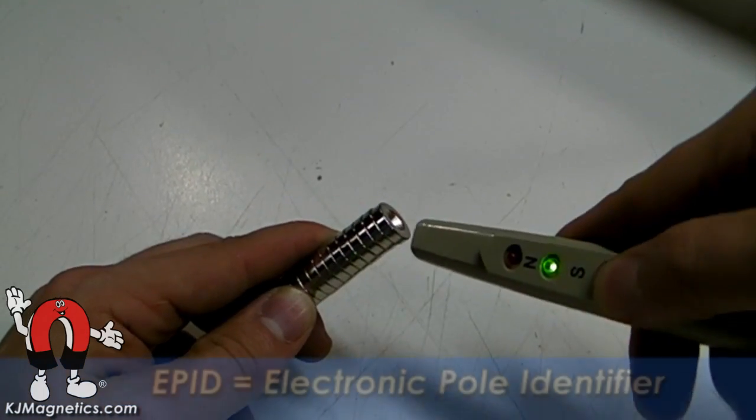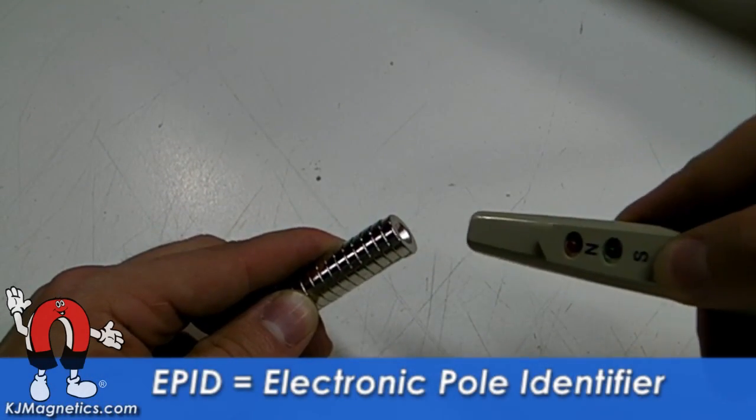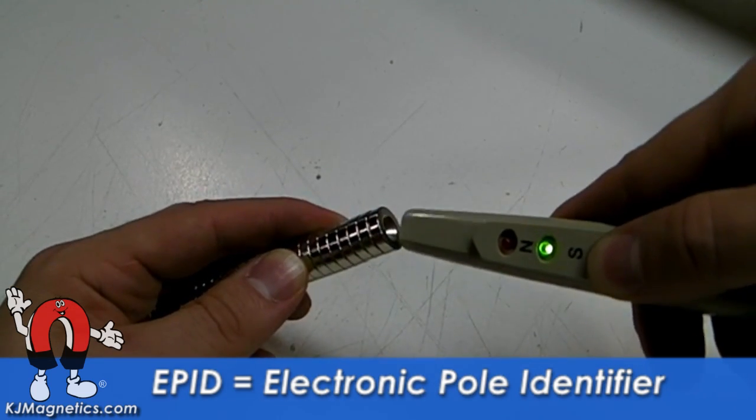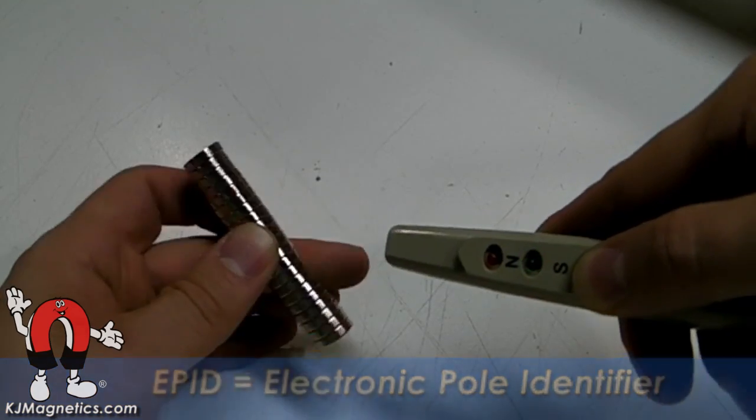It is impossible to tell the difference between the north and south magnets when they are side by side, so we use one of our electronic pole identifiers, or EPID, to tell them apart.